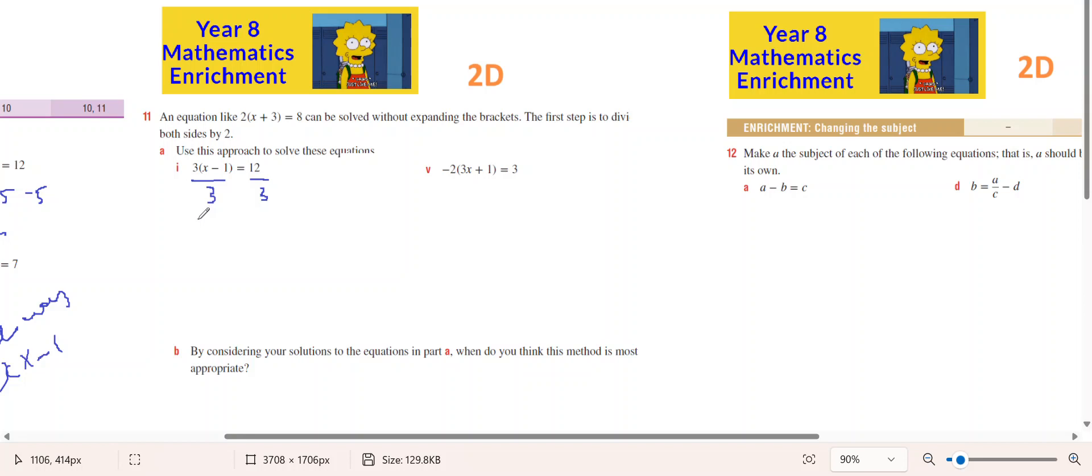The 3s cancel on the left, which is x minus 1 equals 4, and then x equals 4 plus 1, which is x equals 5.